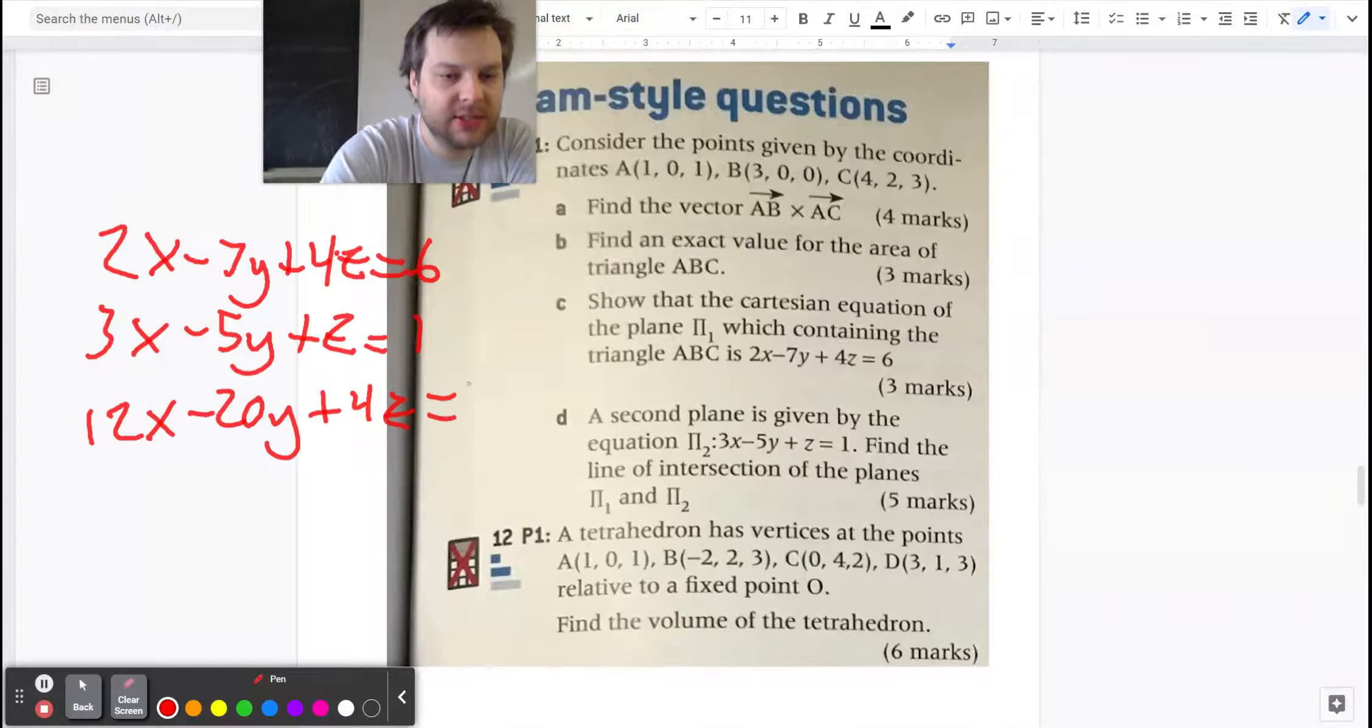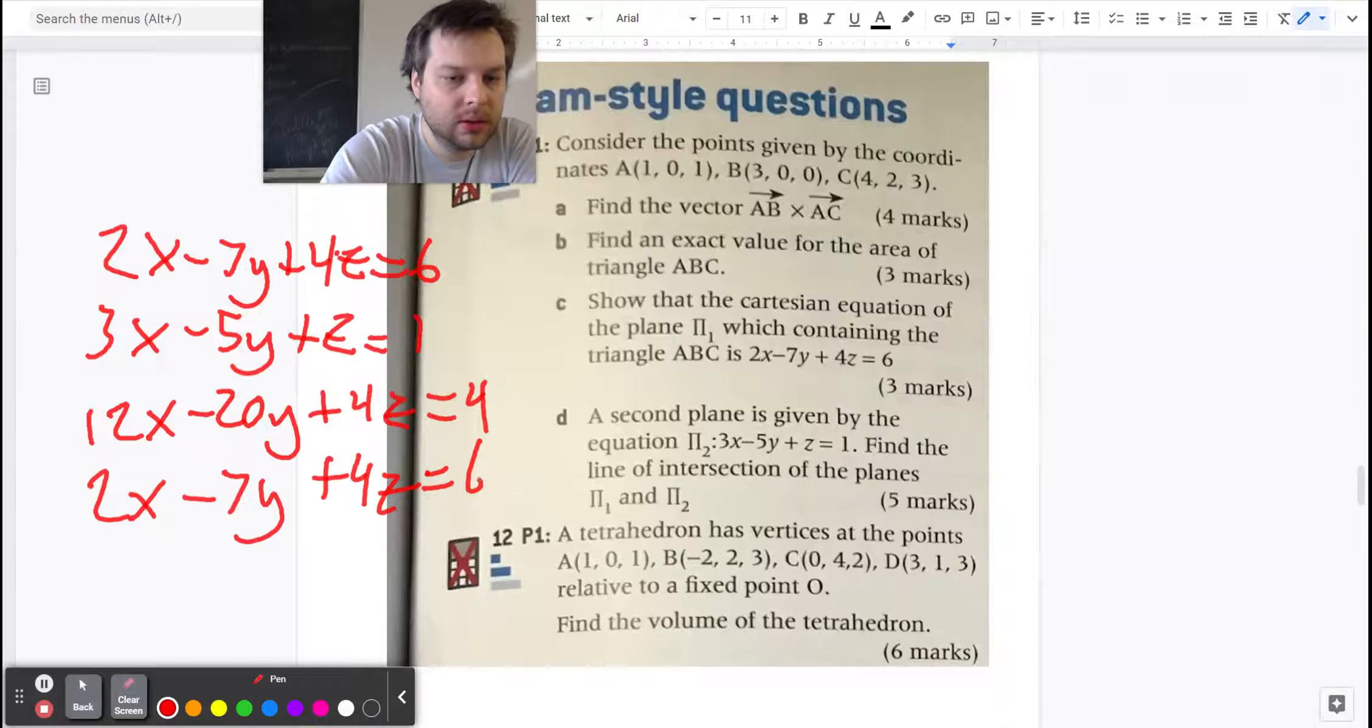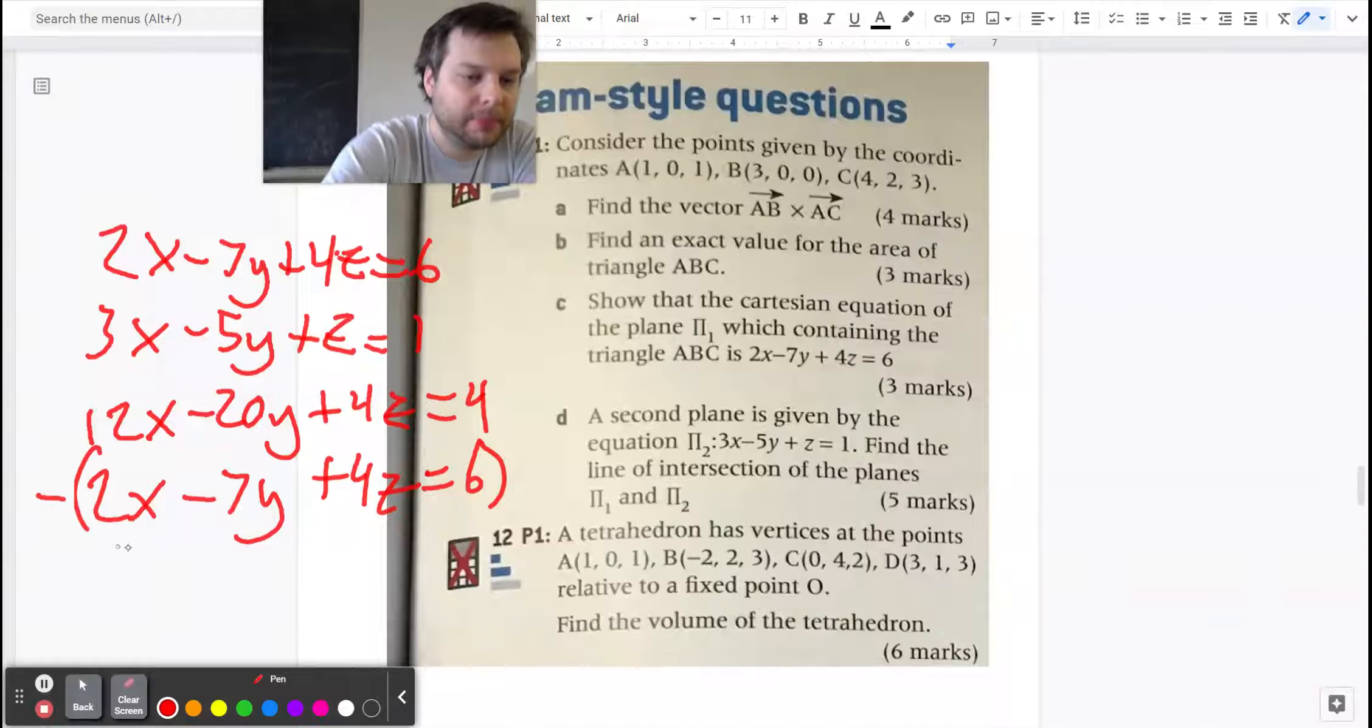And by match up I just mean that the z coordinates are going to be identical. Now I'm just writing plane one again down below it for clarity, and I'm going to subtract top minus bottom.